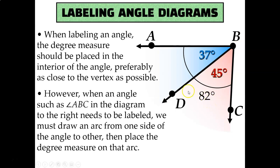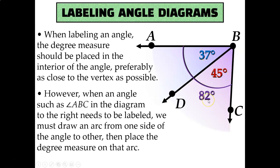Likewise, the measure of angle DBC is 45 degrees because I see this 45 inside of that angle near the vertex. But I also see this 82 degrees inside of angle DBC. So does that mean that angle DBC measures both 45 degrees and 82 degrees simultaneously? No, of course not — that's not possible. Notice that the 82 isn't actually all that close to the vertex of B. 82 is actually attached to this arc, and this arc tells you how far to go left to right to figure out how big that angle actually is. The arc attaches to rays BA and BC, meaning that the 82 degree angle is actually referring to all of angle ABC. This also matches up with the angle addition postulate: 37 plus 45 gives me 82 degrees.